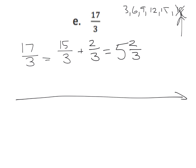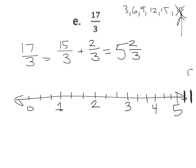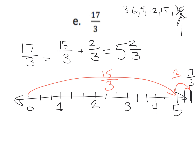If we model seventeen-thirds on a number line, starting at zero: three-thirds is one, six-thirds is two, nine-thirds is three, twelve-thirds is four, fifteen-thirds is five — then sixteen-thirds, seventeen-thirds. So here's our seventeen-thirds. We can clearly see that's fifteen-thirds, which puts us at five, plus these extra two-thirds. That's how we know the answer is five wholes and two-thirds.